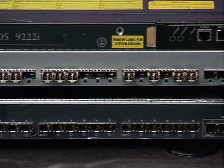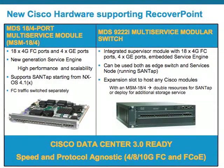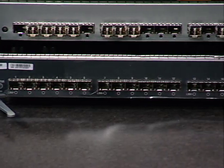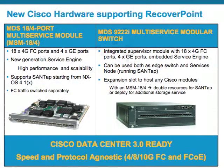The 18 front panel ports are independent from the service engine, so the layer 2 Fibre Channel traffic is switched separately from the SanTap level traffic. The MDS 9222i multi-service modular switch is a standalone switch with a compact three-rack-unit form factor, expansion slot modularity, and advanced capabilities normally found only in director-class switches. It comes with 18 gigabit-per-second Fibre Channel ports and 4 gigabit Ethernet IP storage services ports, and can be used as both an edge switch and a services node for fabric traffic splitting using Cisco SanTap.